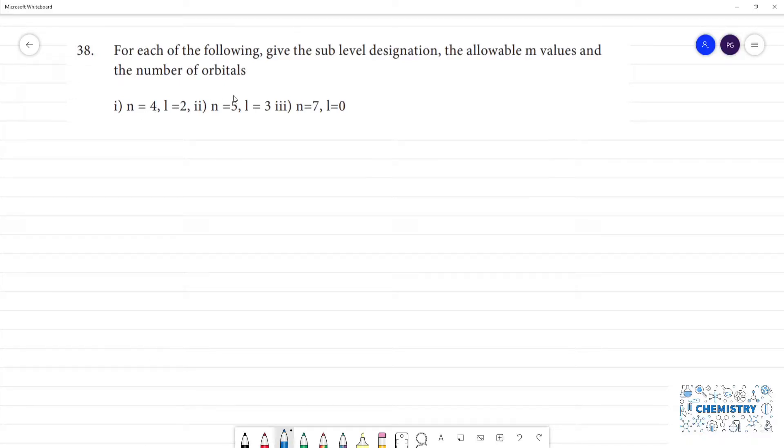For each of the following, given sublevel designation, the allowable n values and the number of orbitals. For first, n is equal to 4. So table me first n value, first one is 4. Next, l value equal to 2.